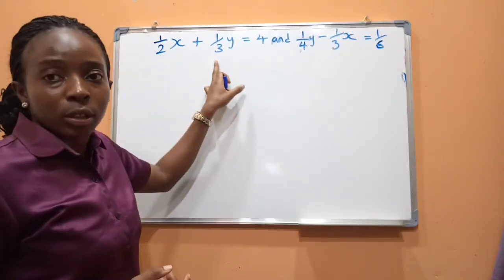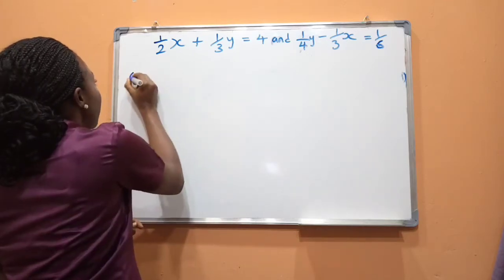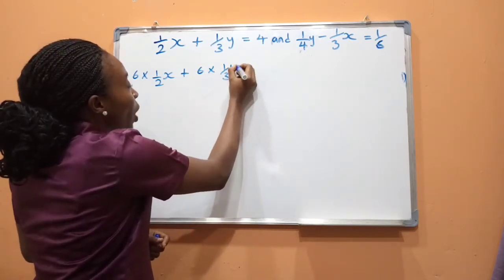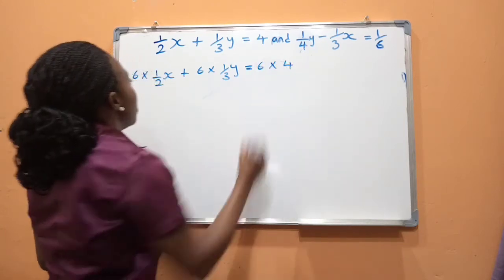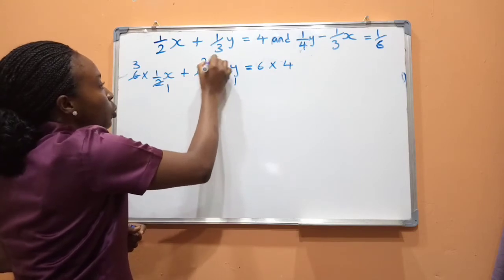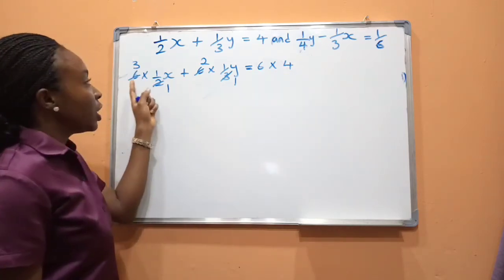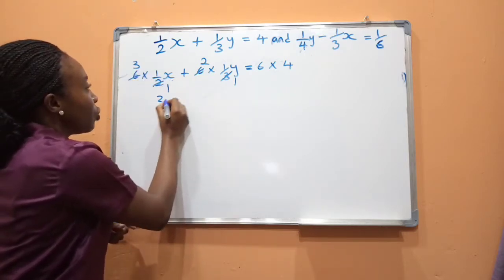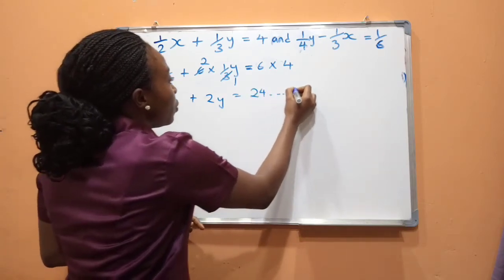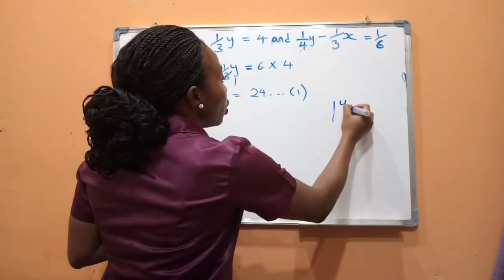Let's take another example for further clarity. First, find the LCM of the denominators 2 and 3, which is 6. Multiply each term by 6: 6 × (x/2) + 6 × (y/3) = 6 × 4. Simplifying: 6÷2 = 3, 6÷3 = 2, 6 × 4 = 24. So we get 3x + 2y = 24 — equation 1.